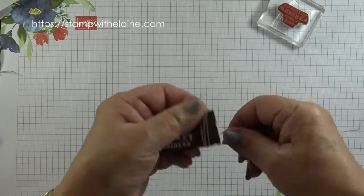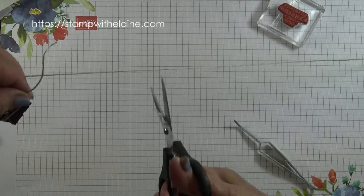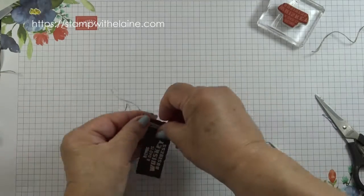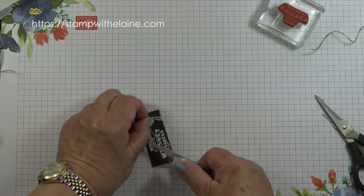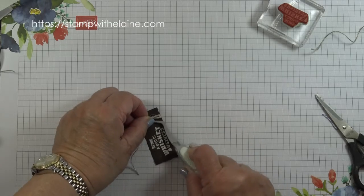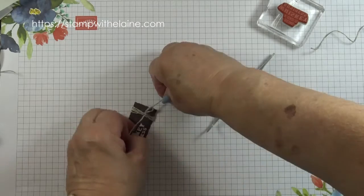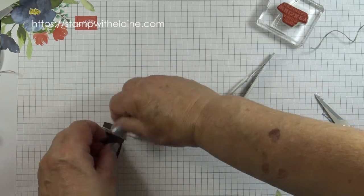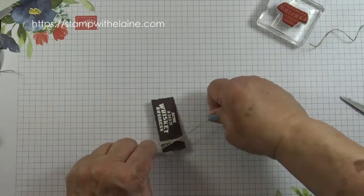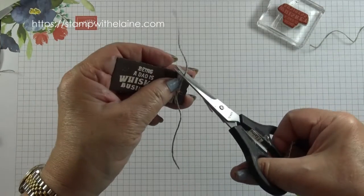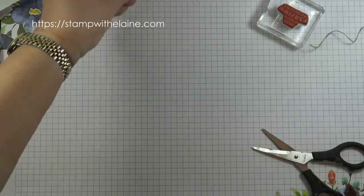Then I'm just going to wind the linen thread around a few times. Make sure I've got plenty room to work with. Tuck that in and tie a knot and then trim the pieces off. Set it aside to use later.